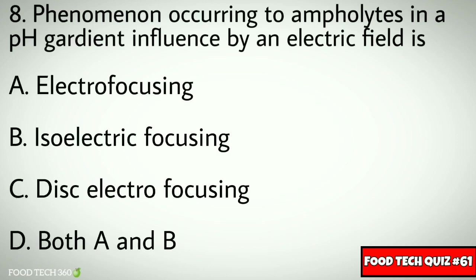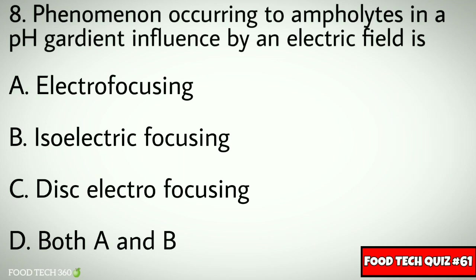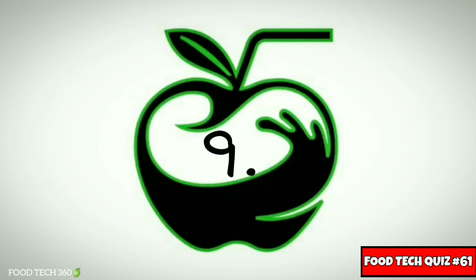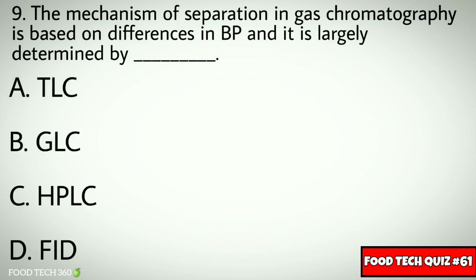Correct answer: d) both a and b. Question number nine: the mechanism of separation in gas chromatography is based on differences in the boiling points, and it is largely determined by — options: a) TLC, b) GLC, c) HPLC, d) FID.